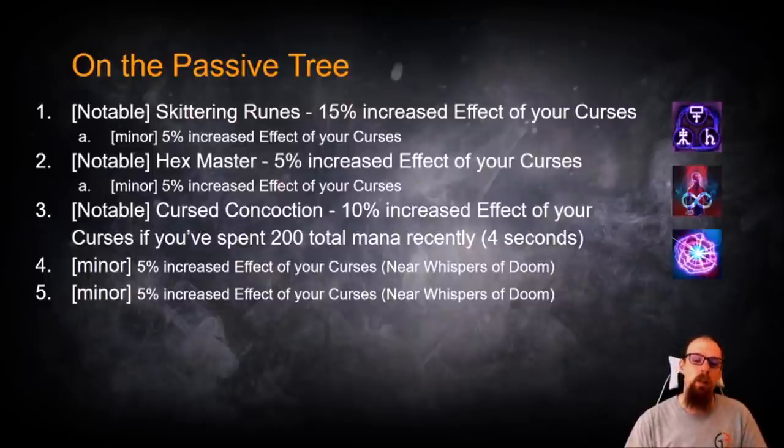Then there are some other Minor Increased Effect of your curses, Near Whispers of Doom, the major notable on the tree that's up near the Witch Tree, and those both give you 5% each.